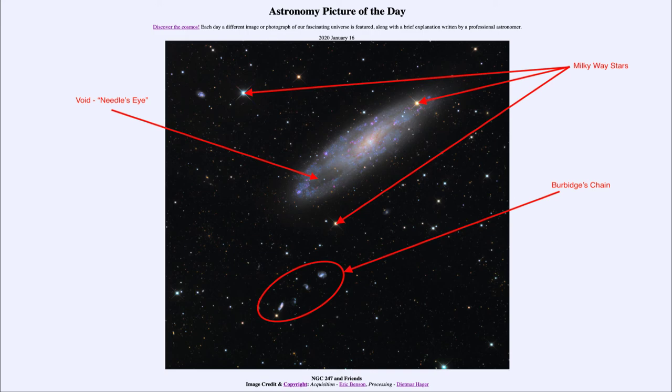We can do that for some of the closer galaxies, but when you get to galaxies like those in Burbage's chain that are 300 million light years away, we see only the combined light of the stars, not the individual stars. So a star like the one in the upper right portion of NGC 247 is really just a star within our Milky Way that happens to lie along that line of sight towards this much more distant galaxy.